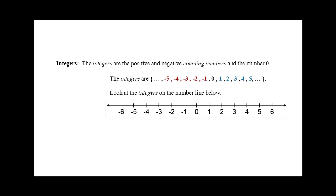The next number system is called the integers. The integers are the positive and negative counting numbers and the number 0. The integers do not have a beginning or an end.